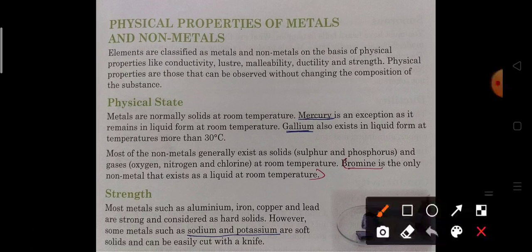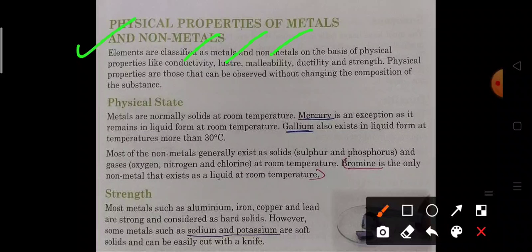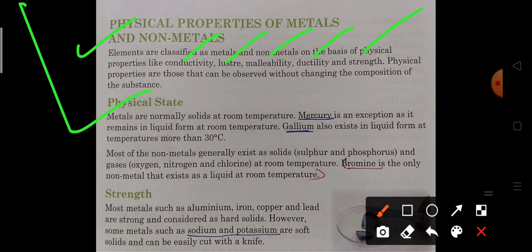Now, the physical properties of metals and non-metals. We will discuss about their conductivity, lustrousness (shiny or not), malleability (can be converted into sheets), ductility (can be converted into wires), and their strength. First physical property is physical state.